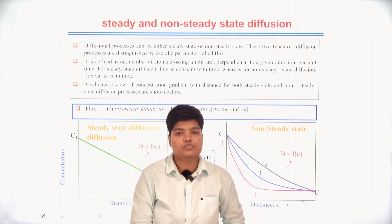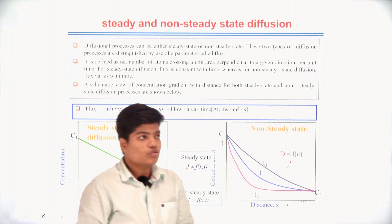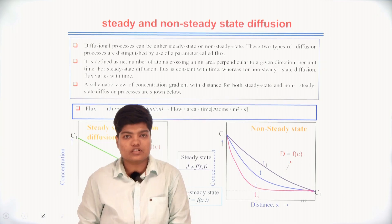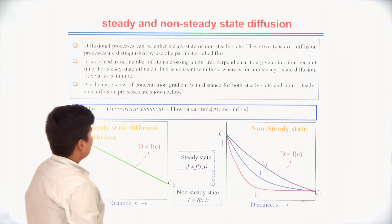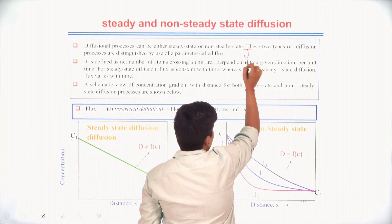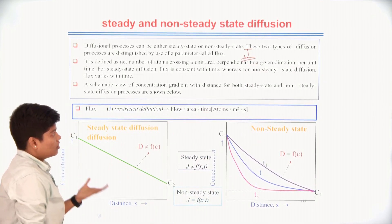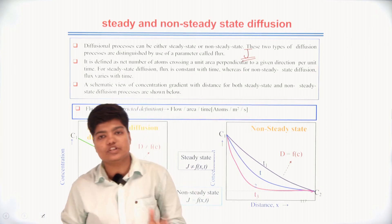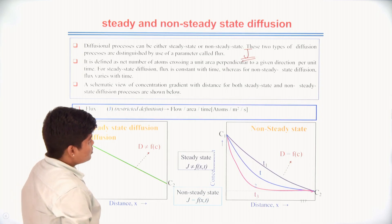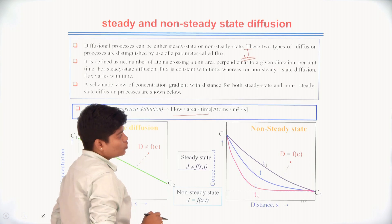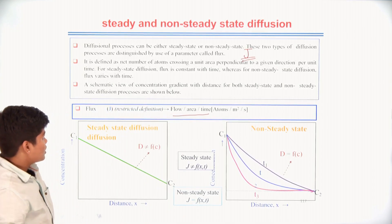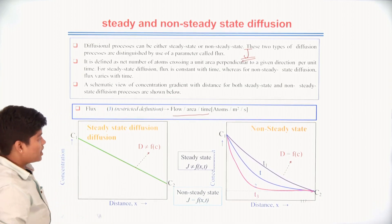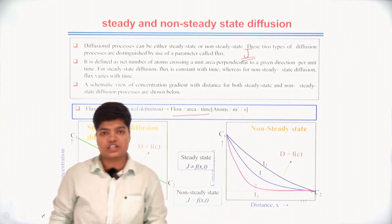The diffusion process can be of two types: steady state and non-steady state. The difference between them can be better understood by considering one parameter known as flux, symbolized by capital J. Flux is the number of atoms crossing per unit area per unit time, with units of atoms per meter squared per second. The concentration gradient is dC/dX.